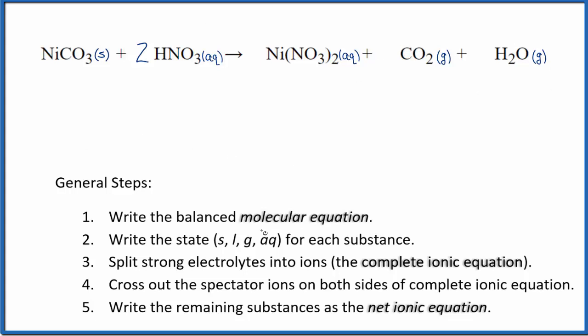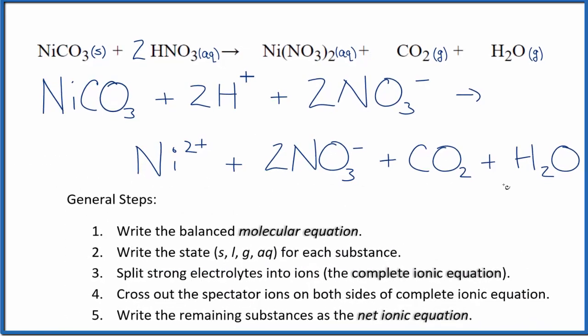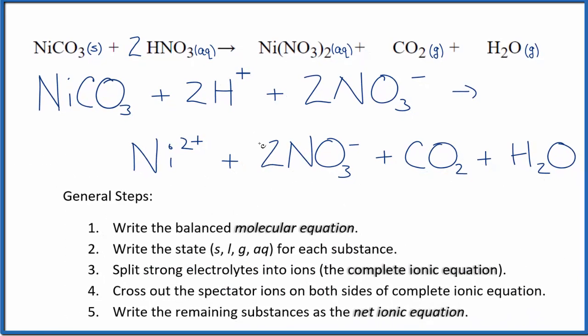Once we have the states, now we can split the strong electrolytes into their ions. That's going to give us the complete ionic equation and that looks like this. So this is the complete ionic equation. Note that we don't split solids apart, so we left this nickel 2 carbonate together and we don't split gases apart either. So we kept our CO2 here and our H2O together in our net ionic equation.